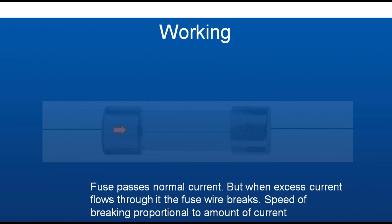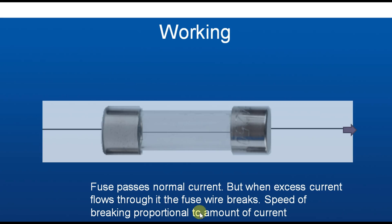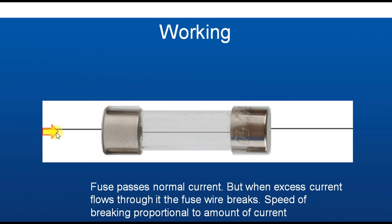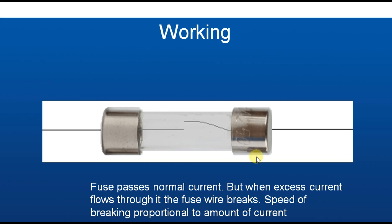Working of Fuse: A fuse passes normal current, but when excess current flows through it, the fuse wire breaks. The speed of breaking is proportional to the amount of current flowing through it.